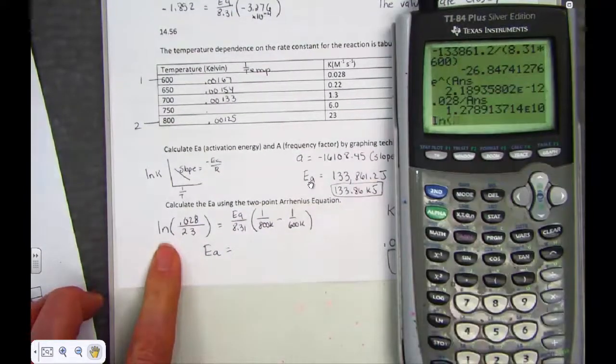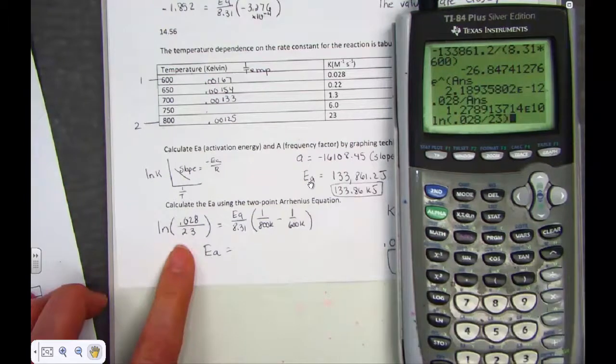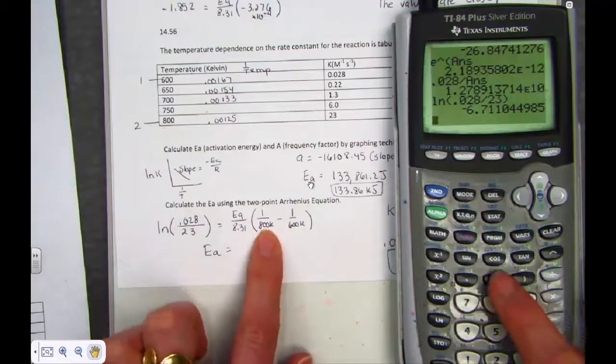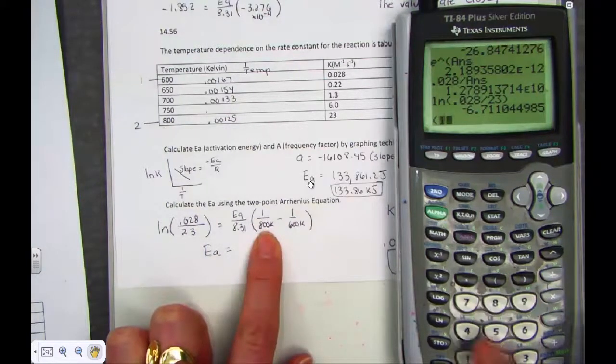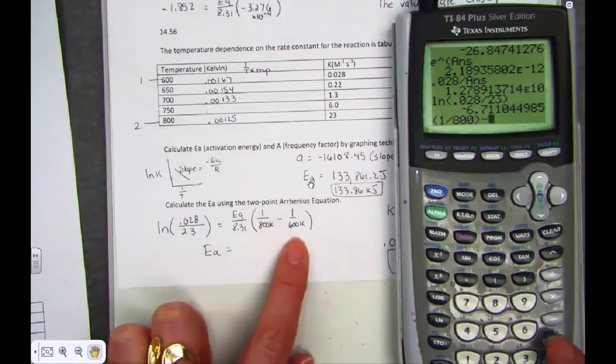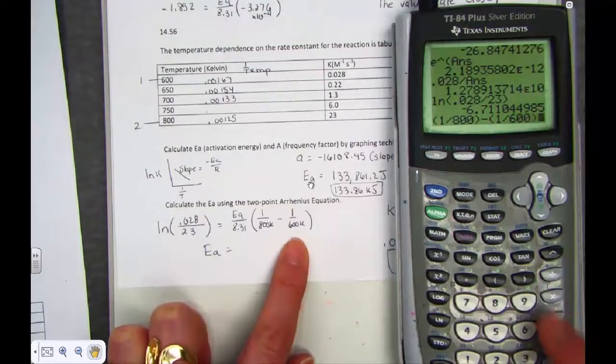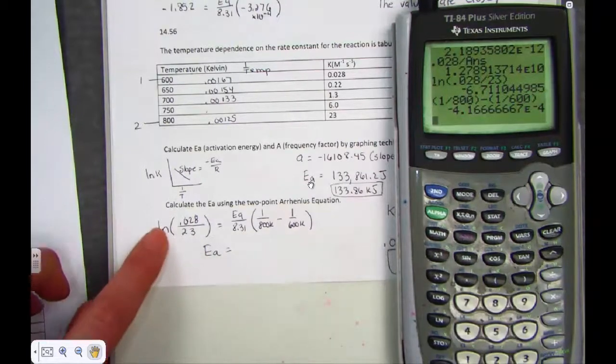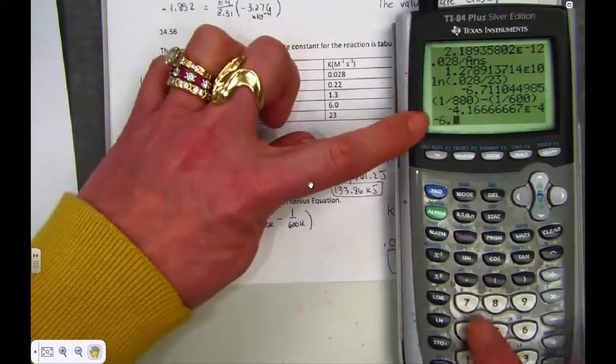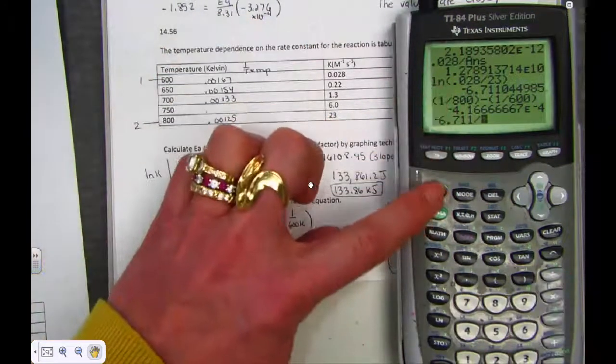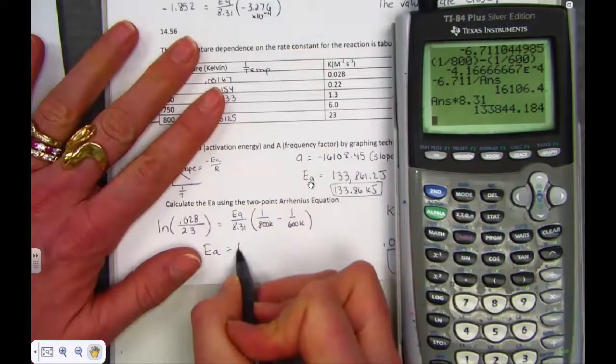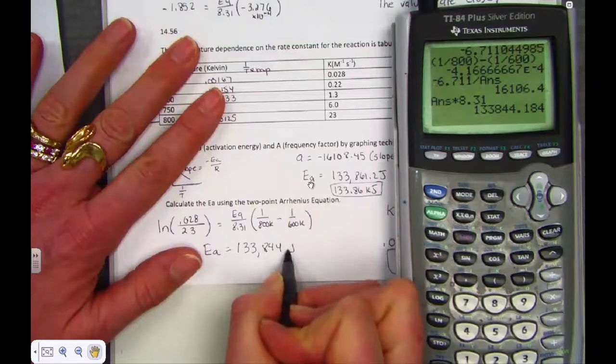Let's simplify the left side by taking natural log of 0.028, dividing that out by 23. Negative 6.711. Let's now simplify what's in the parentheses here. 1 divided by 800, minus 1 divided by 600. Let's take the left side, which we hit was negative 6.711, divided by that previous answer, times 8.31. And we get a value, 133,844.6 joules, or if you prefer, 133.8 kilojoules.